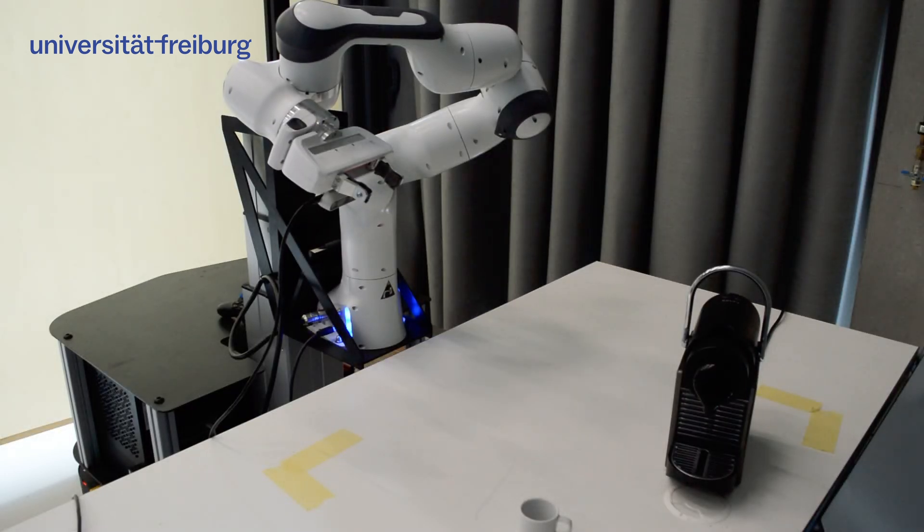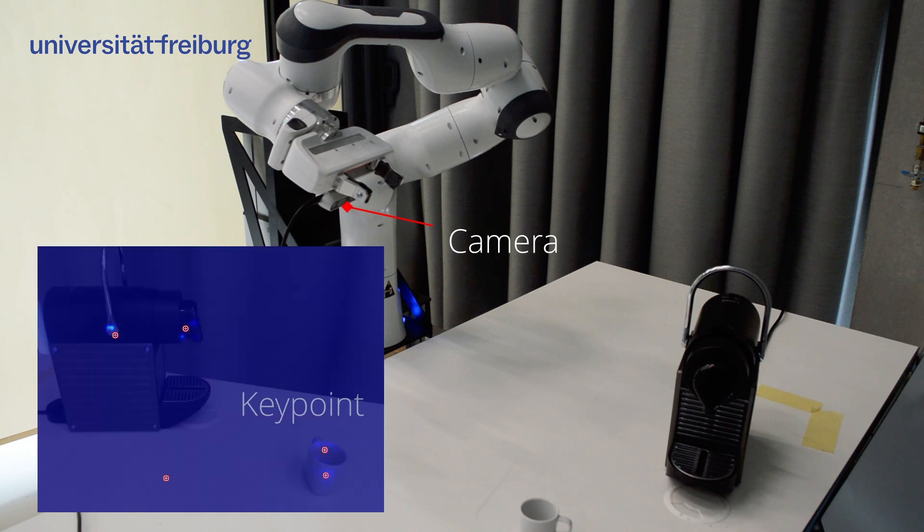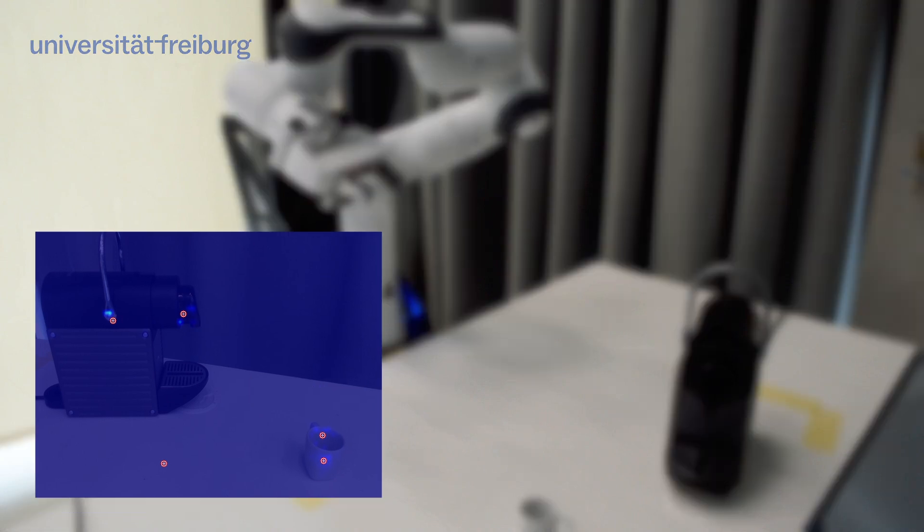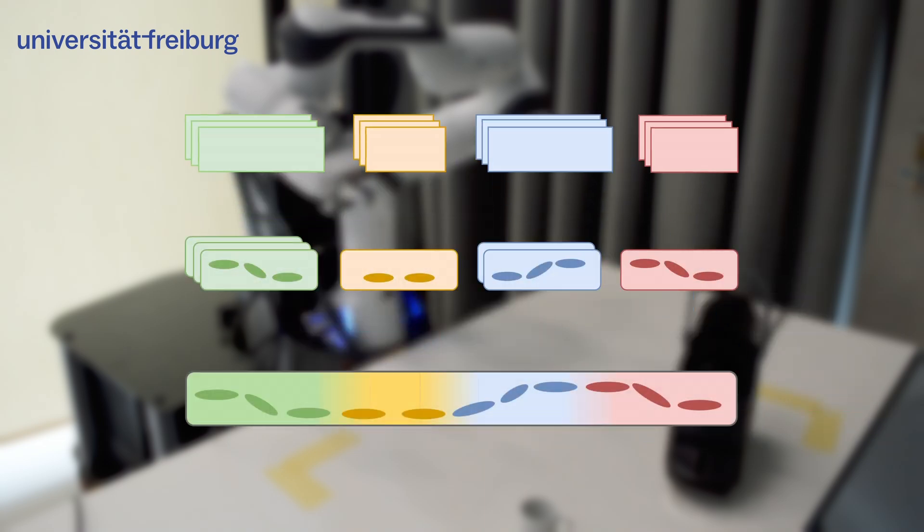We utilize a single wrist mounted RGBD camera to localize a set of key points in this scene. Tapas GMM uses the key points as candidate task parameters and selects the relevant parameters per skill. We then fit one model per skill and cascade the skill models to generate full task trajectories.